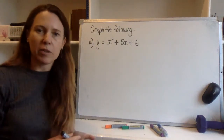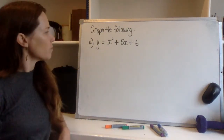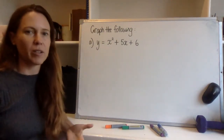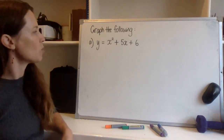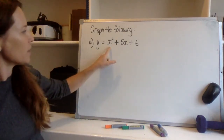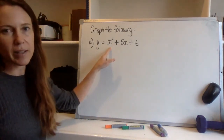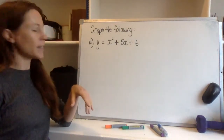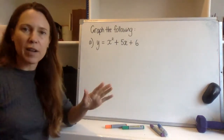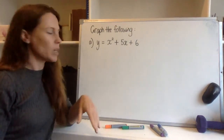Now let's graph some parabolas. We'll start with an easy one. I can tell this one's going to be quite straightforward because I can already see that I'm going to be able to factorise the right hand side. But let's not get ahead of ourselves — let's go through those five steps that we've written down.